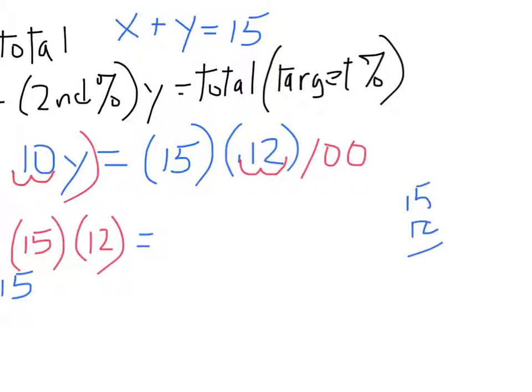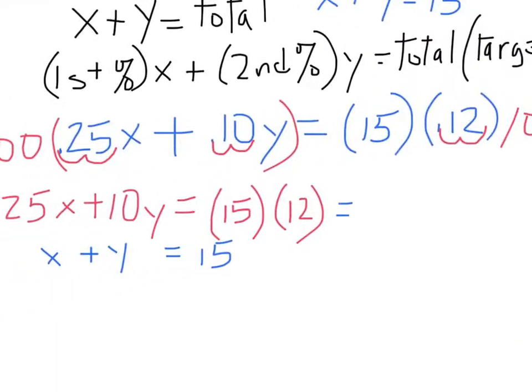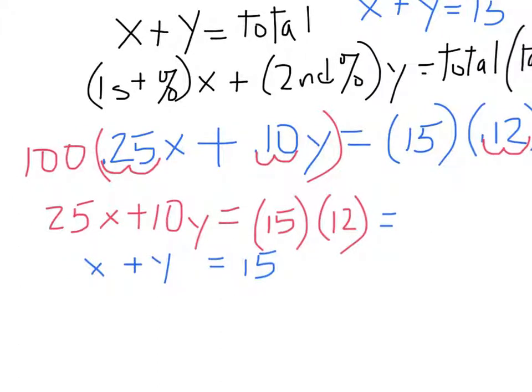Let's see, 15 times 12. 2 times 15 is 30, then 1 times 15 is 15. That gives us 180. So that means this is actually 180.